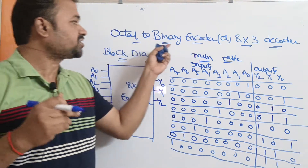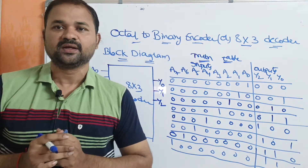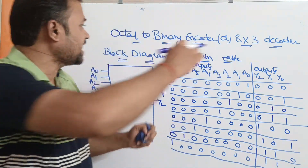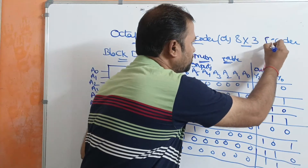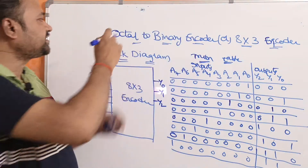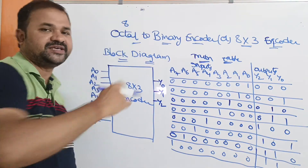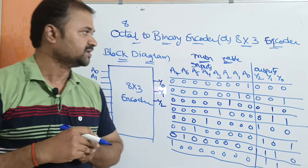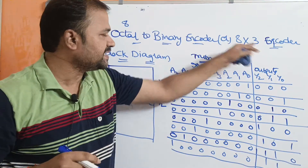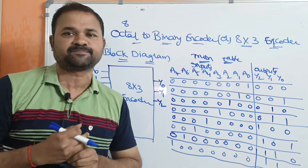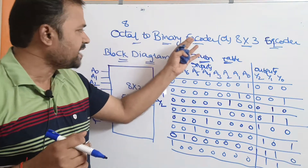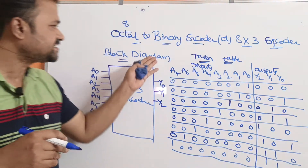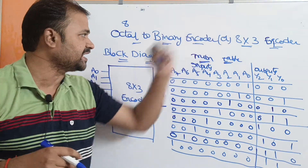Let us discuss about octal to binary encoder, or 8 by 3 encoder. Here, octal means the base value is 8, whereas binary means it is a combination of zeros and ones. This binary number mainly contains 3 bits. So let us see the block diagram of the octal to binary encoder.